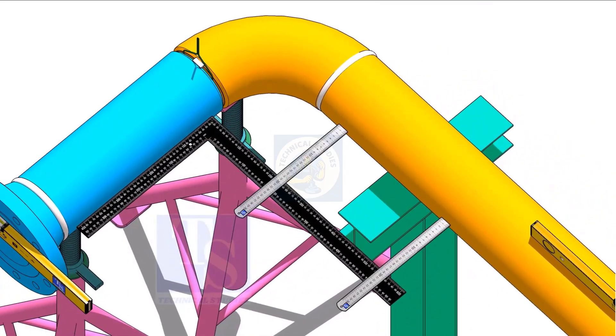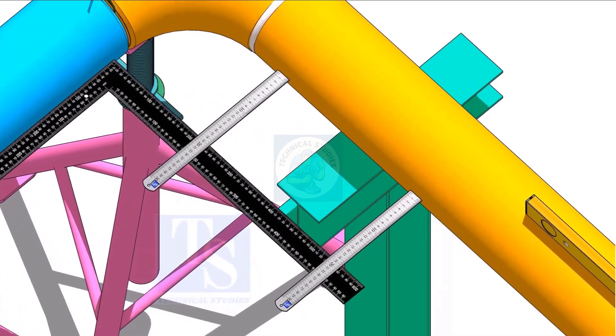Correct the squareness of the spools, as shown, and tack weld on the sides of the joint.